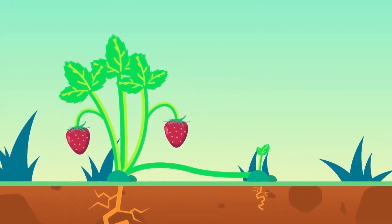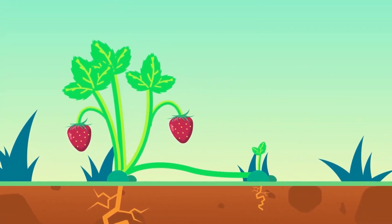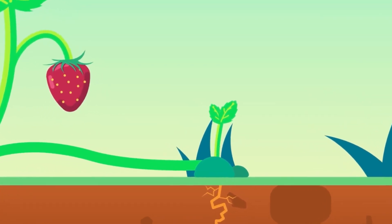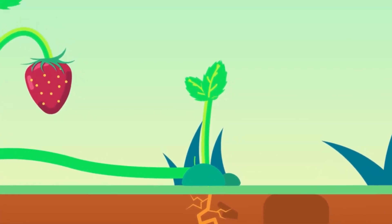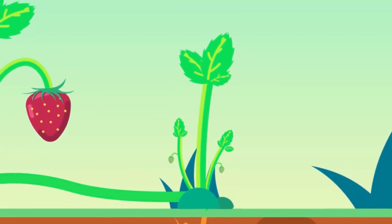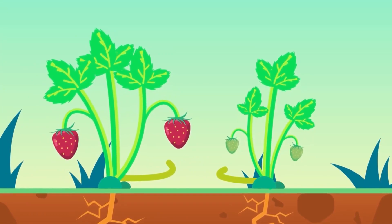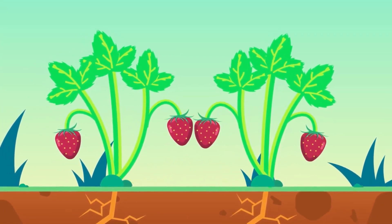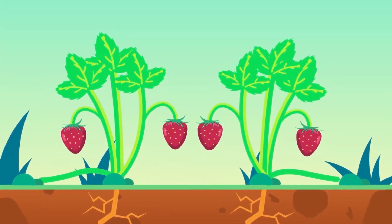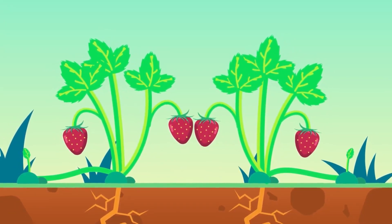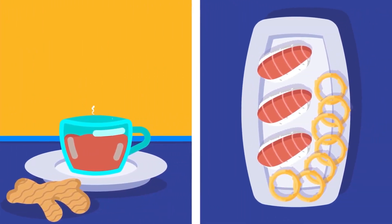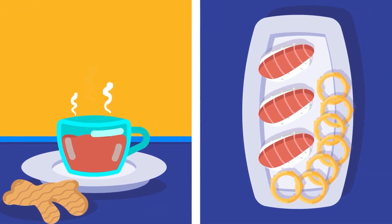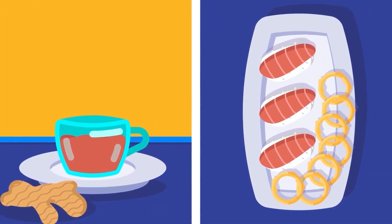Vegetative reproduction or propagation is a form of asexual reproduction found in plants. It usually involves the growth of a new part of a plant, usually a bud or a stem, which eventually becomes separated from the parent plant to form a new individual. In this way, several plants can be produced from a single parent plant.